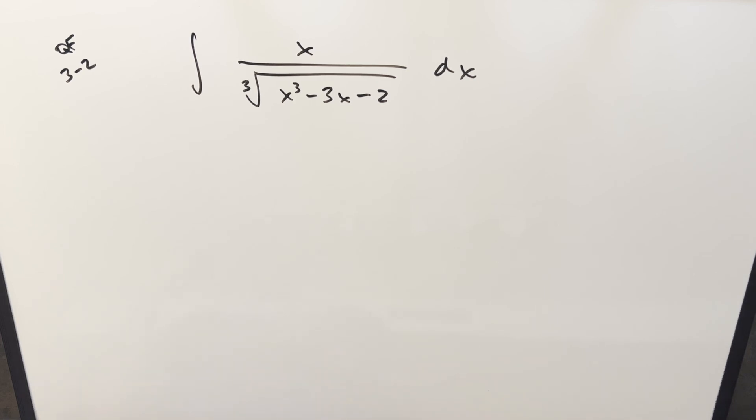Okay, we have here an interesting integral from the MIT integration B 2025 quarterfinals round 3 problem 2. We have the integral of x over the cube root of x cubed minus 3x minus 2 dx.